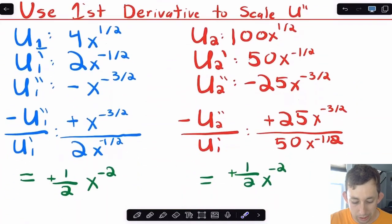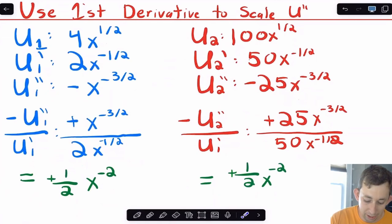Well, what we're gonna do is we're gonna use the first derivative to scale the second derivative. And so I've rewritten the derivatives here. And so notice now, if I take the second derivative and I divide it by the first derivative, that's gonna account for the fact that the second person's utility is really just 25 times the first person's utility function.